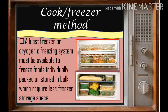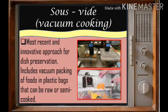The cook-freeze method involves freezing food in individual or bulk packs, which requires less freezer storage space. After cooking, the food needs to be placed in the freezer to preserve it. The last way of handling food is sous vide or vacuum cooking, which includes vacuum packaging of foods in plastic bags that can be raw or semi-cooked. This French word means 'under vacuum' — a cooking method where food is placed in a sealed container with no air and cooked very slowly at a constant temperature in water.